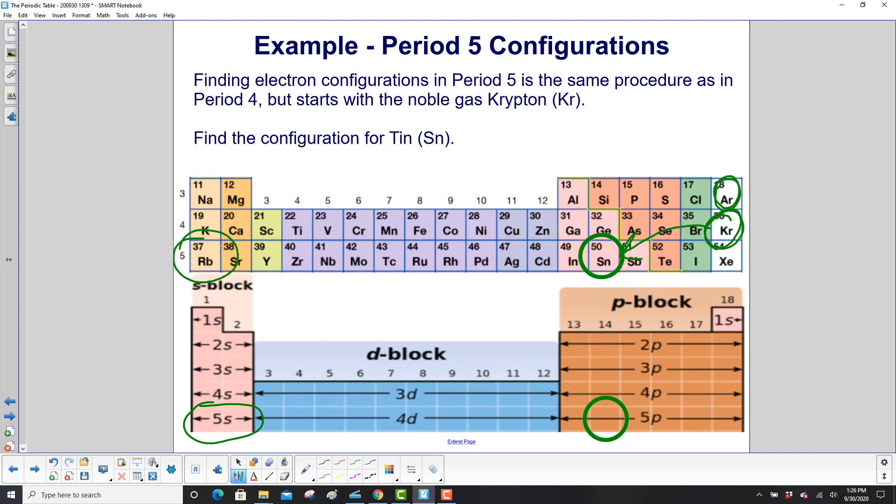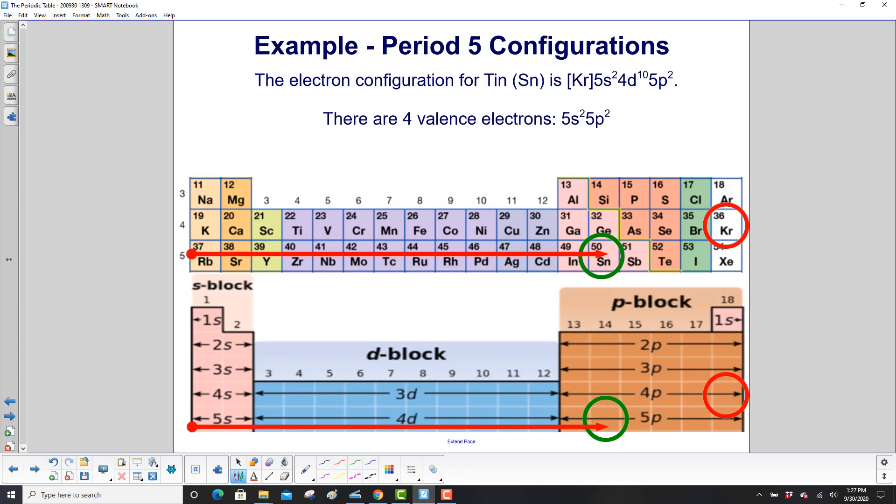So find the configuration for tin. So we start with krypton, which is the noble gas in the period above tin, and we put it in brackets. And then we go down to period five. We pick up the two 5s electrons. We pick up all 10 4d electrons. And then we count over to tin. And we just go two more. So that would be 5p2.